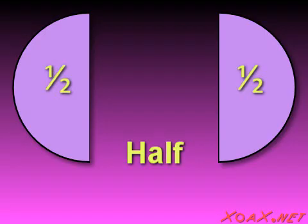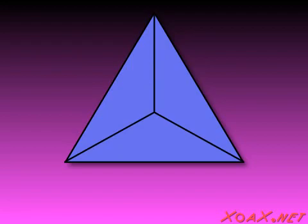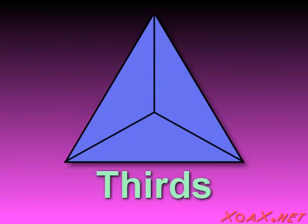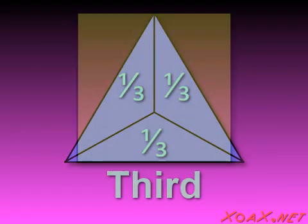Splitting an object into two equal pieces gives us two halves. We can divide this triangle into three equal regions that are smaller triangles like this, and these regions are called thirds, since each one contains a third of the area of the larger triangle.